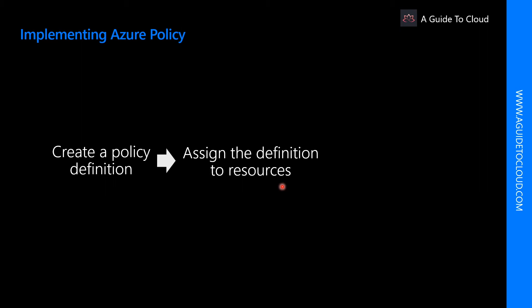The second stage of implementing Azure Policy is assigning a definition to the scope of your resources. To implement your policy definitions, you assign them to resources. A policy assignment is a policy definition that has been assigned to take place within a specific scope, which could range from a management group to a resource group. Policy assignments are inherited by all child resources — meaning if a policy is applied to a resource group, it is applied to all resources within that resource group. However, you can exclude a sub-scope from a policy assignment.